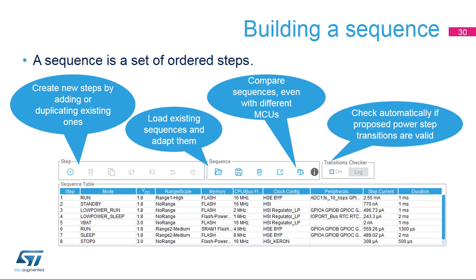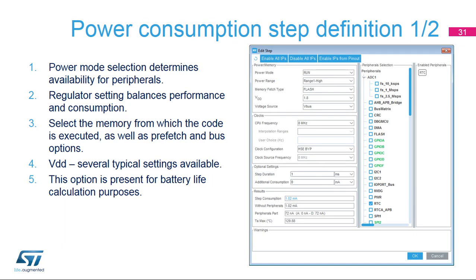The Compare feature displays a comparison of the power and performance in the current scenario with a saved sequence — different configurations, including different MCUs, can be evaluated against each other. A power step can be added or edited in this dialog window. If the transition checker is enabled, it will preset the new step with allowed values. The power step is determined by several characteristics, with the power mode being the most important. The availability and characteristics of each power mode are described in the specific reference manual or data sheet. Power mode selection has the most significant impact on the availability of other settings, interfaces, and power performance balance.